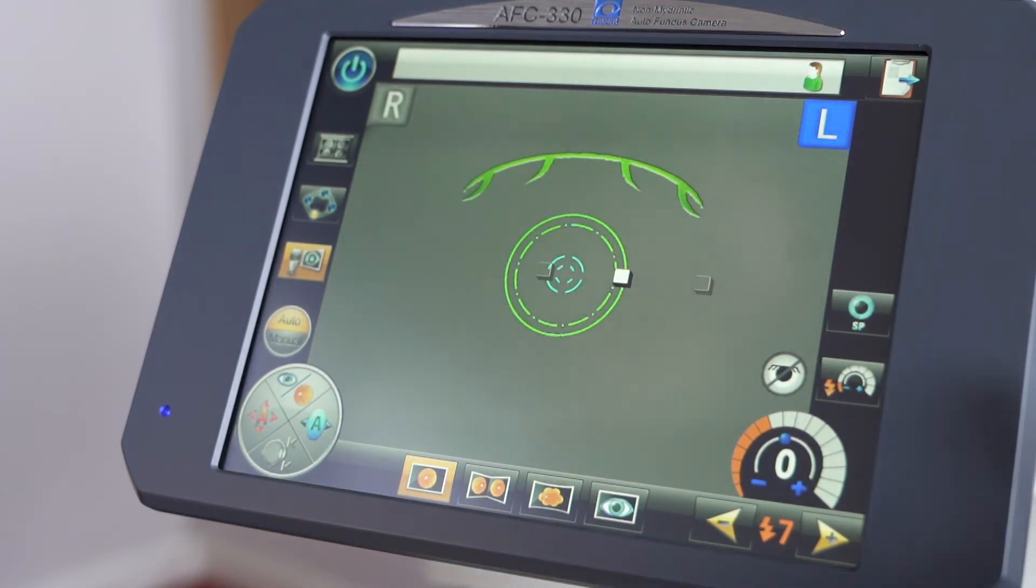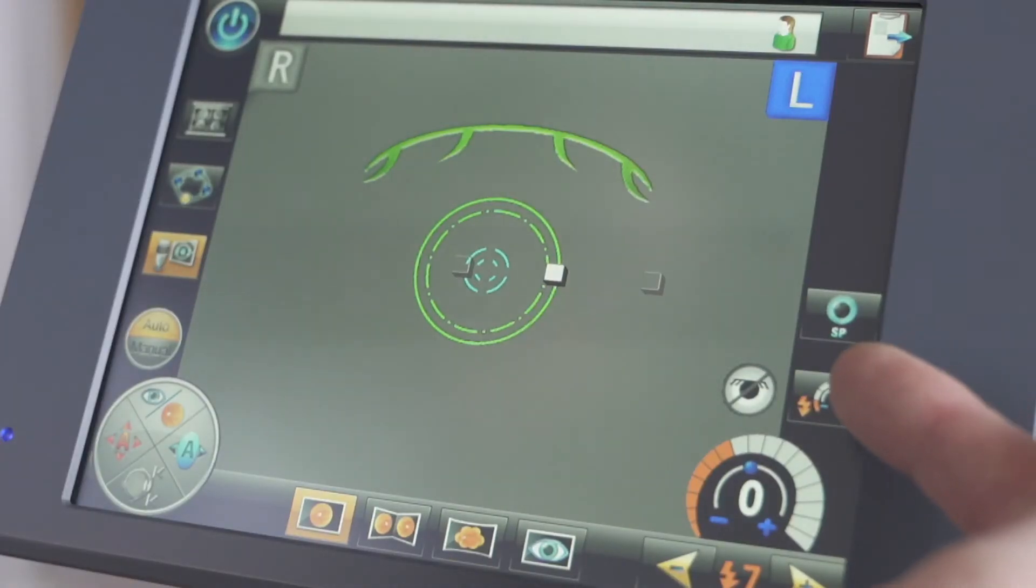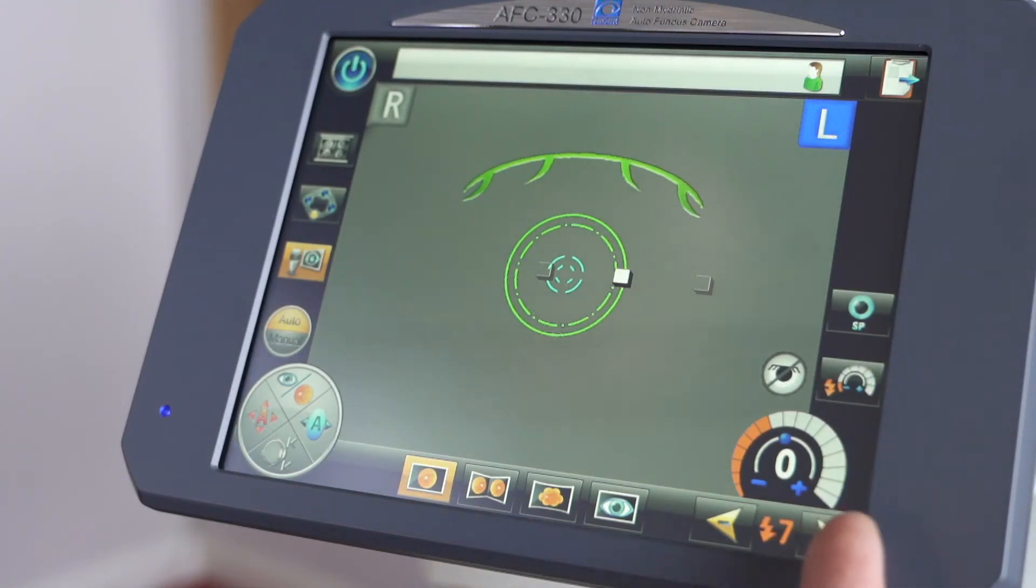On the other side we have the small pupil function. We also have the ability to quickly and easily drop the flash level. And here we do have the flash level. So we can easily move it up or move it down depending on the lighting conditions and the actual patient.